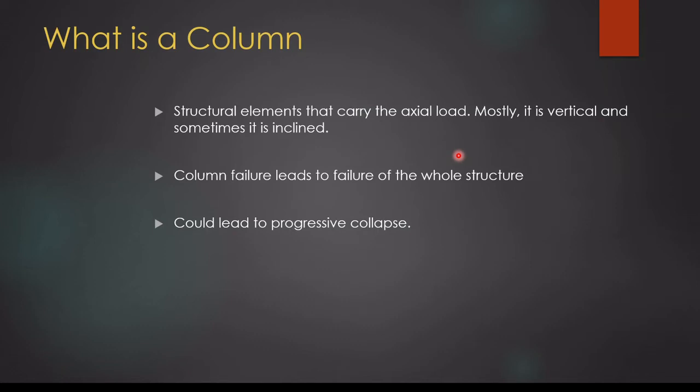What is a column? A column is a structural element that carries a vertical load from the structure to the foundation. Basically it is a vertical element, though there may be inclined columns also. In a structure we have slabs, beams and columns. The load on the slab will go to the beam, then beam load goes to the column, and then the column will transfer the load to the foundation.